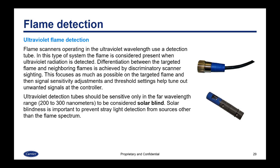Flame scanners operating in the ultraviolet wavelength use a detection tube. The flame is considered present when ultraviolet radiation is detected. Differentiation between the targeted flame and neighboring flames is achieved by discriminatory scanner sighting — meaning where you're physically aiming it — which focuses as much as possible on the targeted flame. Signal sensitivity adjustments, either internal or external, and threshold settings help tune out unwanted signals at the controller.